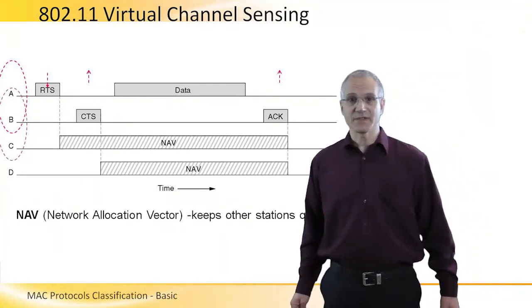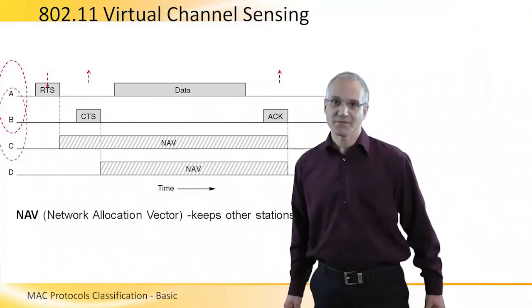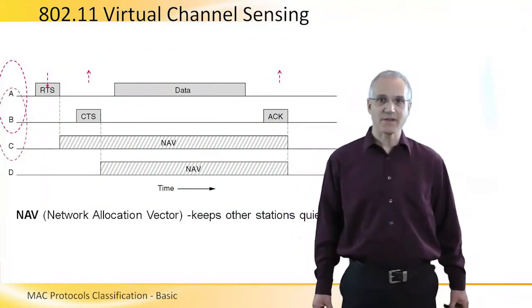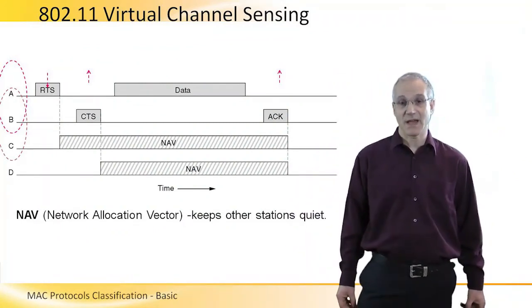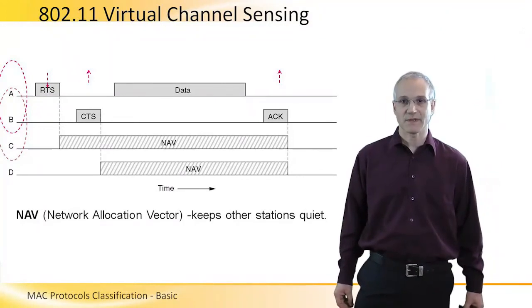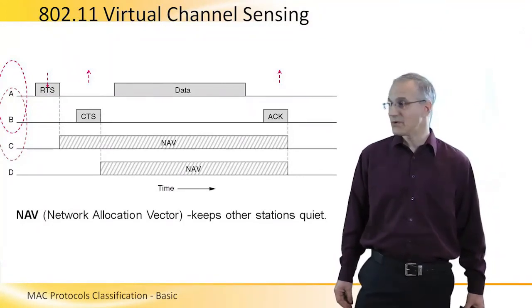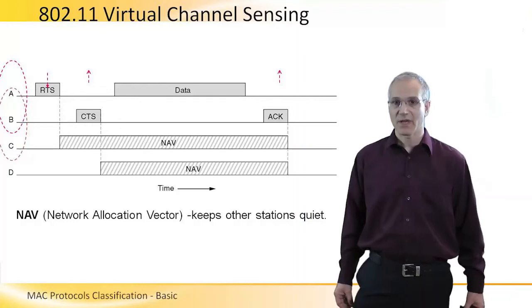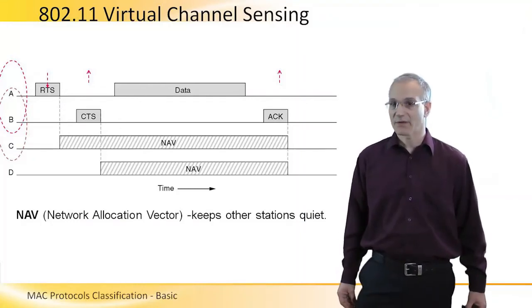After receiving clear to send, A starts transmitting the data. Notice that now, since C and D both got either the request to send or the clear to send, they refrain from using the channel for a period called NAV, or Network Allocation Vector.